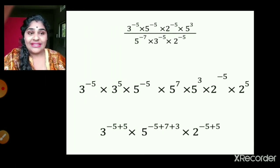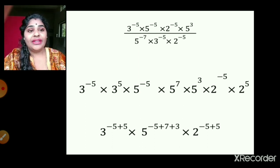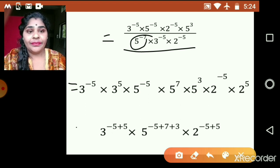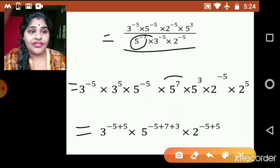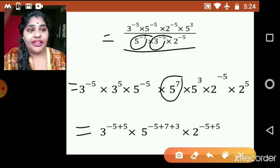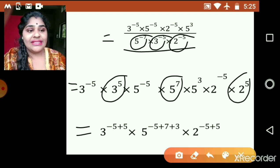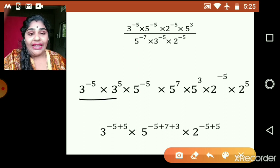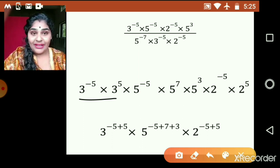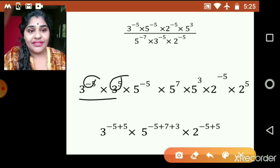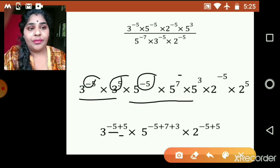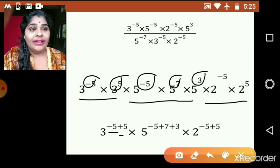This 6 we have written as 2 into 3 — so 2 raised to negative 5 multiplied by 3 raised to negative 5. This 10 also has been written as 5 raised to negative 5 multiplied by 2 raised to negative 5, and 125 has been written as 5 cubed. Once the numbers are simplified, we bring all the denominator terms to the numerator: 5 raised to negative 7 becomes positive 7, 3 raised to negative 5 becomes positive 5, and 2 raised to negative 5 becomes positive 5. Rearranging, the base 5 terms combine as 5 raised to negative 5 plus 7 plus 3, and base 2 terms as 2 raised to negative 5 plus 5.